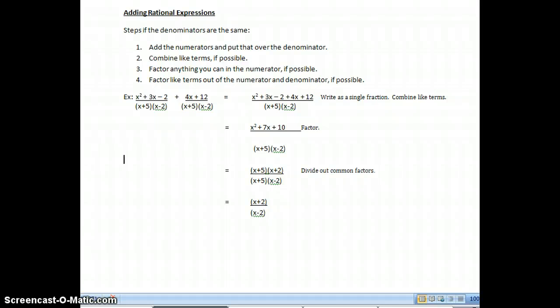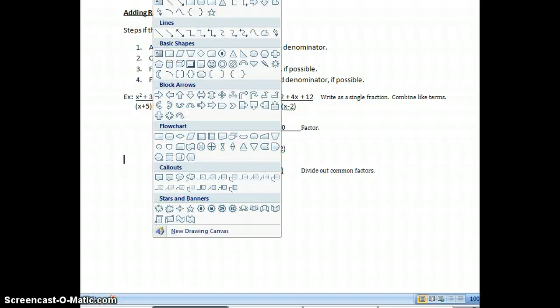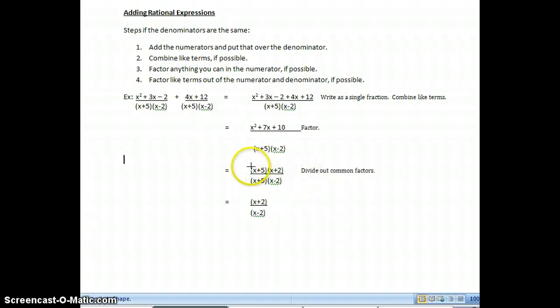Now what I'm going to do, let me pull up a line, I'm going to cross out, factor out x plus 5 and x plus 5. Let me factor that one out again. So they factor out and I'm left with just x plus 2 over x minus 2. That's my answer.